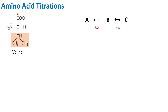In order to understand amino acid titrations, we must understand what is happening in a titration and the ionization of our amino acid. In this example, we are using valine. Valine is a nonpolar, aliphatic, hydrophobic amino acid. Valine has an R group that is non-ionizable.